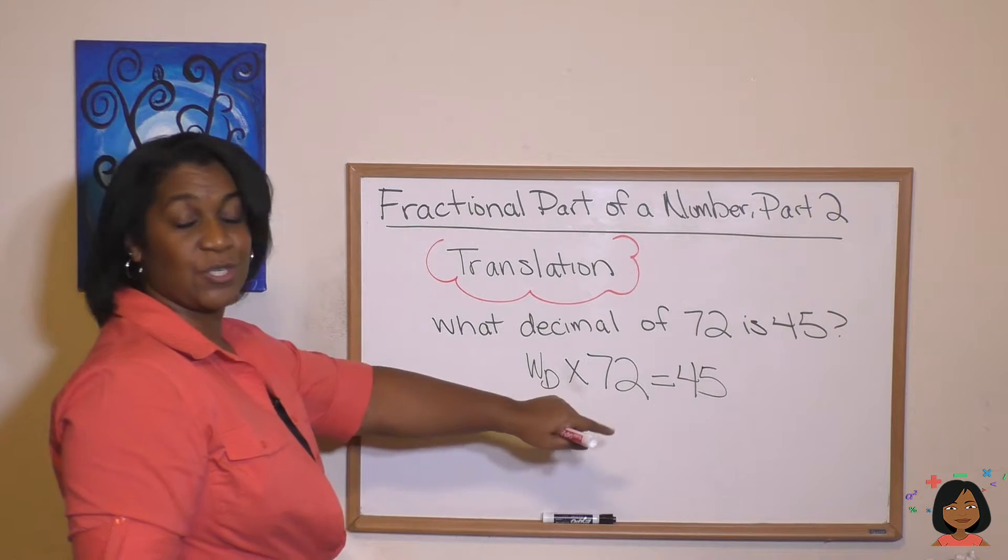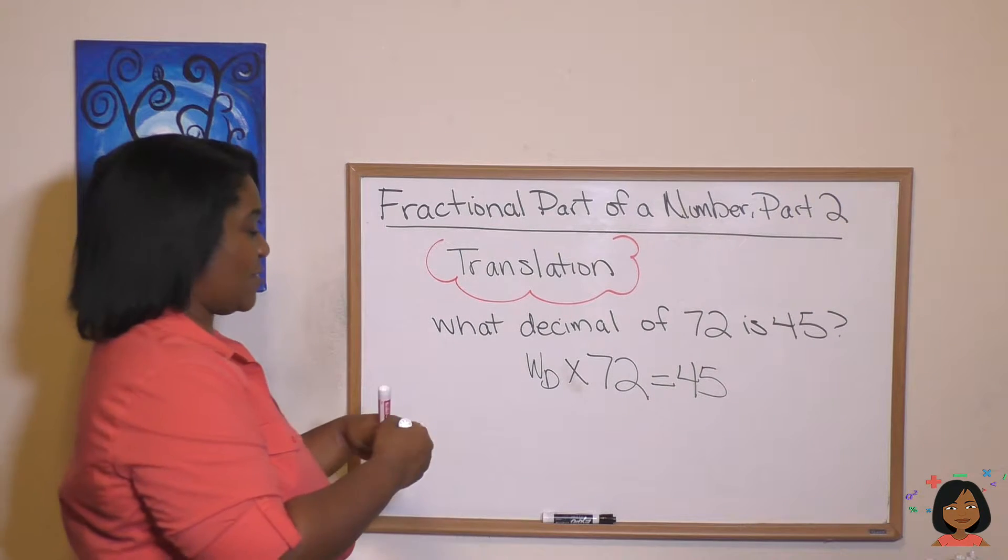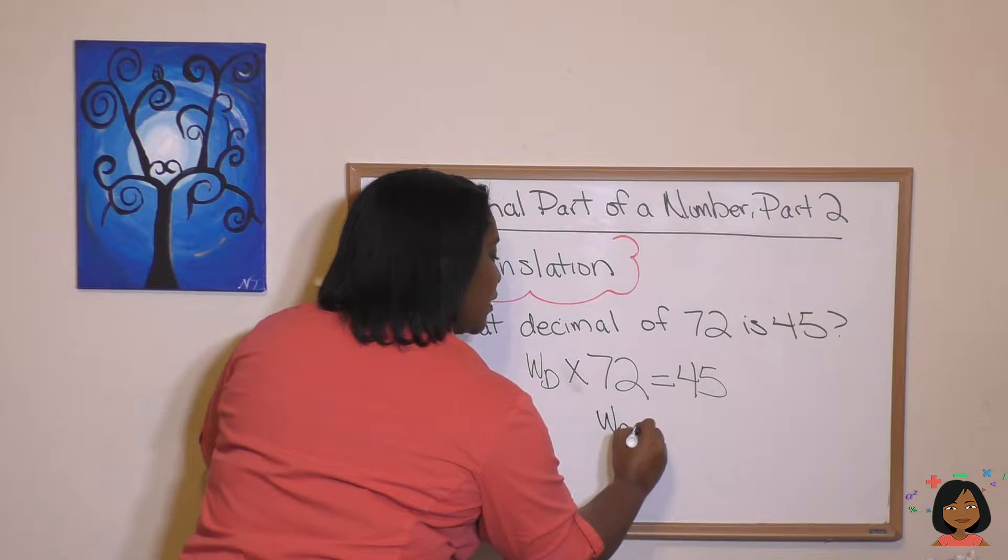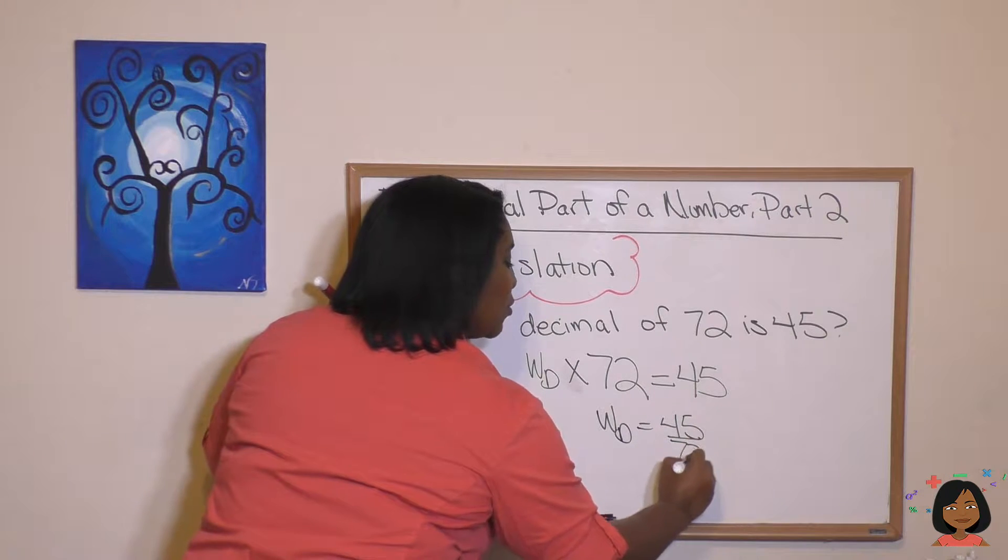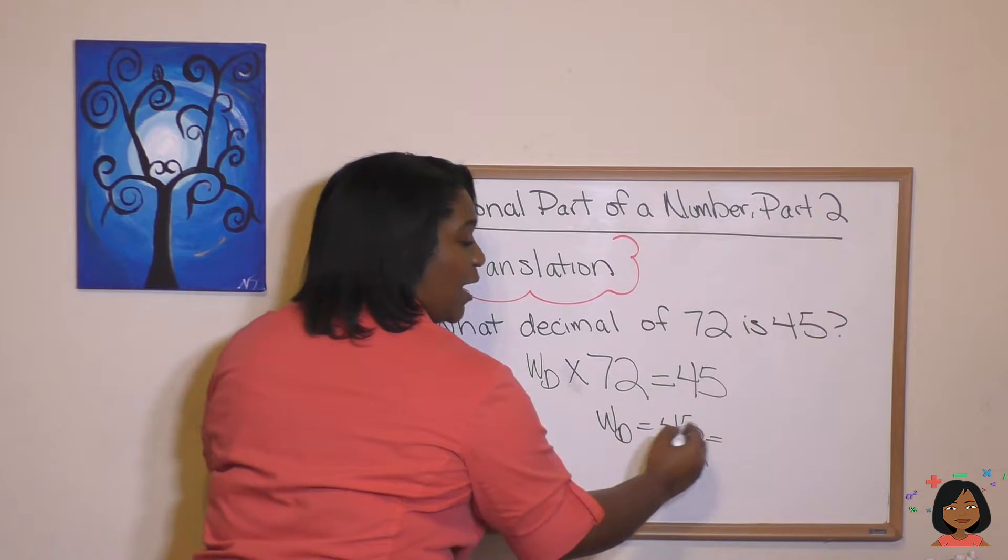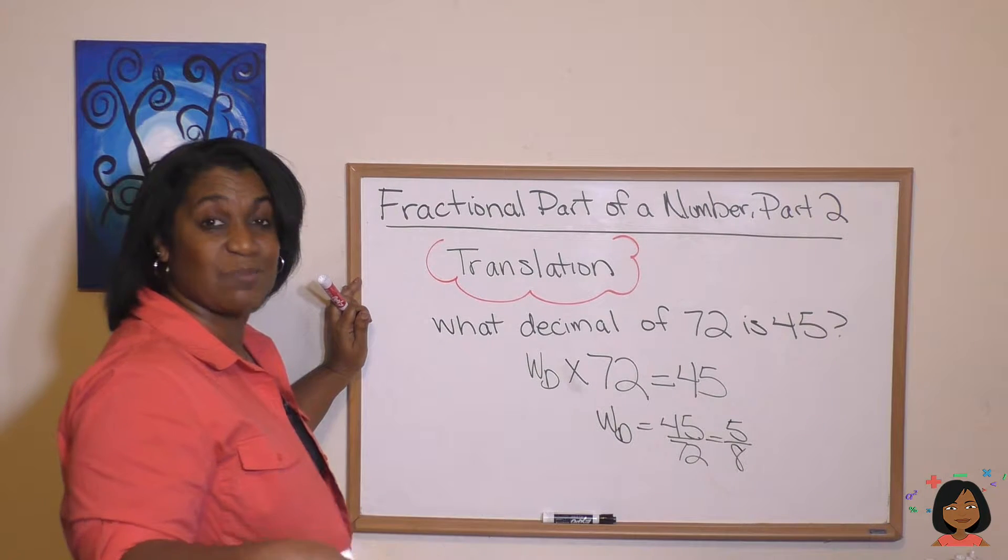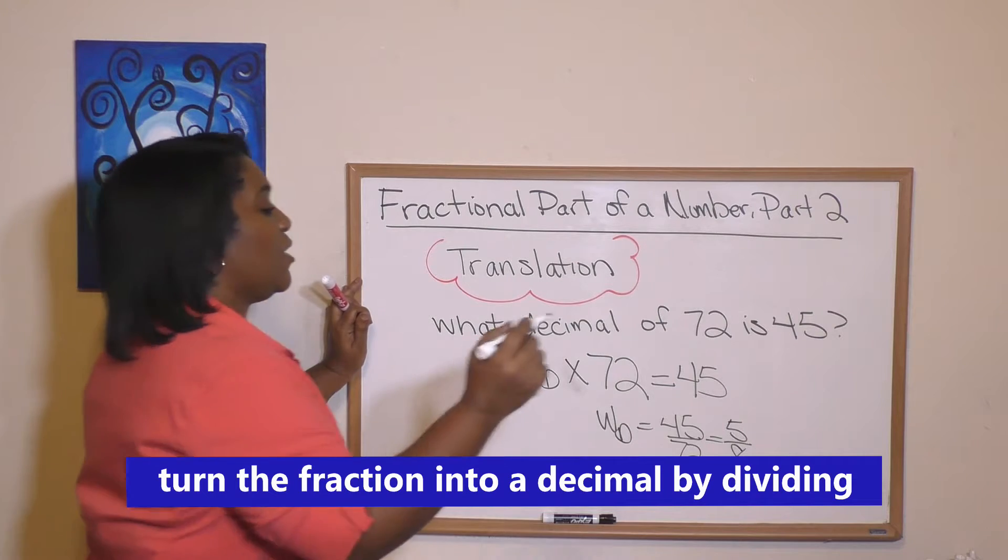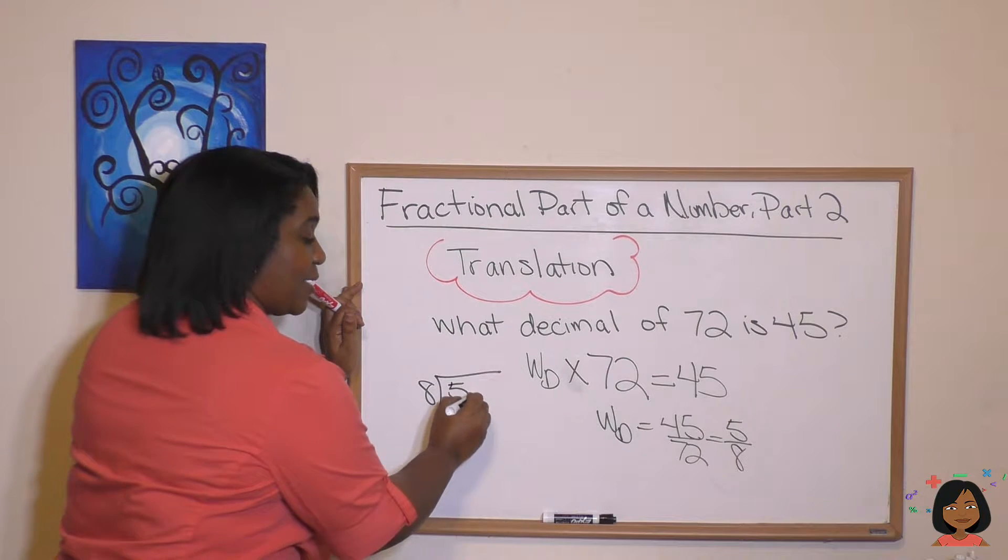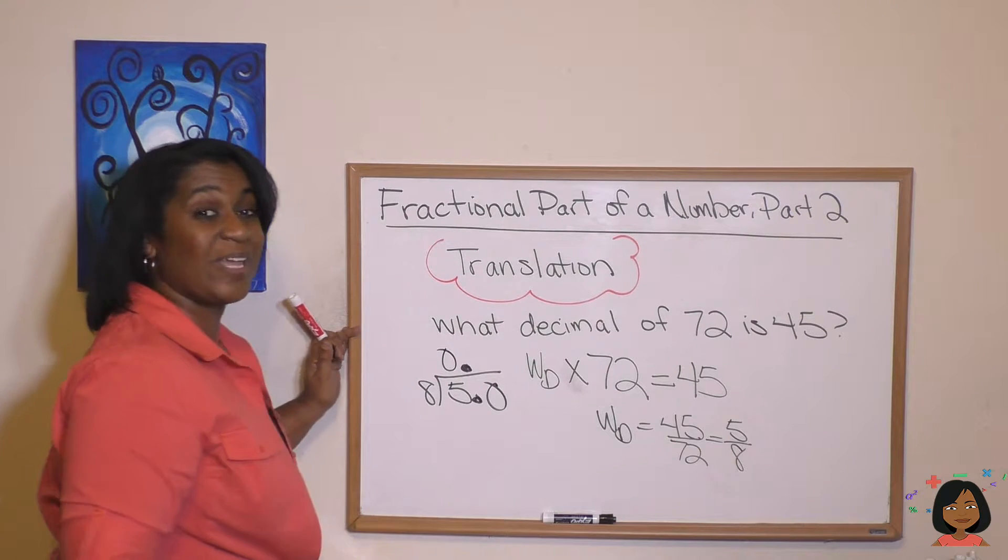What decimal times 72 equals 45. This is a missing number in multiplication, so we divide to find the answer. What decimal equals 45 over 72, just as we had. Let's continue to simplify it. Remember we divided both of these by nine and we got 5 eighths, but we're looking for a decimal. Well, how do we get a decimal from a fraction? We divide. That's right. So let's do our division over to the side. Eight into five, and I'm going to go ahead and add my decimal and add a zero. Let's do it.